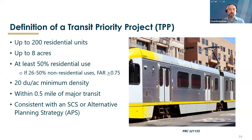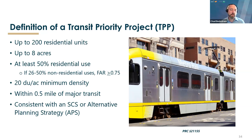To be eligible for streamlining under any of the SB 375 provisions, the project must first meet the definition of a transit priority project, as defined in Public Resources Code Section 21155. This includes projects with no more than 200 units on less than eight acres, within a half mile from a rail stop or a quarter mile from a high-quality transit corridor. At least 50% of the project must be residential with a minimum net density of 20 dwelling units per acre. If the remaining portion is non-residential, floor area ratio requirements of at least 0.75 must be met. And the project needs to be consistent with the SCS or the alternative planning strategy.